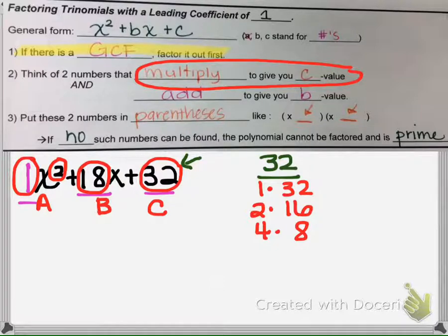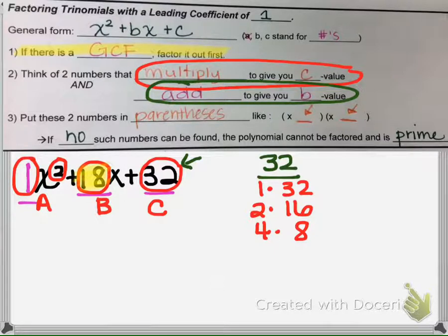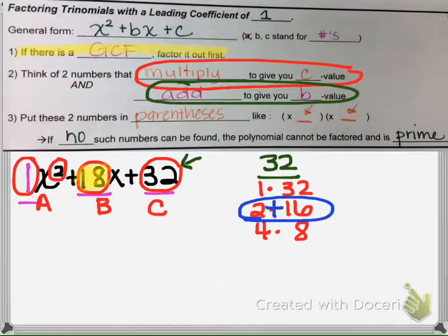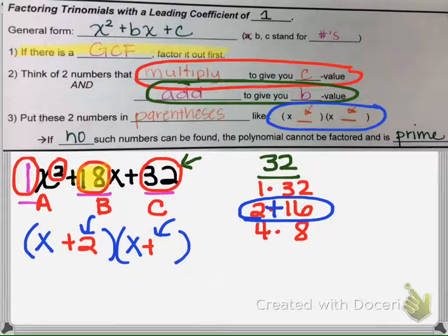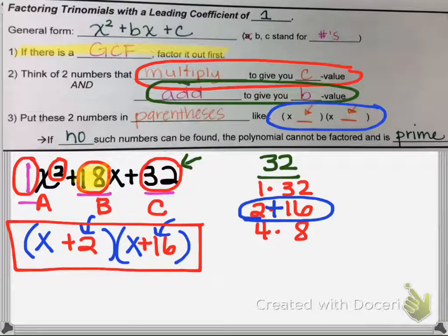We have to pick which factor pair adds to the B value, which is 18. If we pick 2 and 16, they add to 18 and multiply to 32. So we put an X at the beginning of each parenthesis and insert our numbers — positive 2 and positive 16. That is how we factor a trinomial with a leading coefficient of 1.